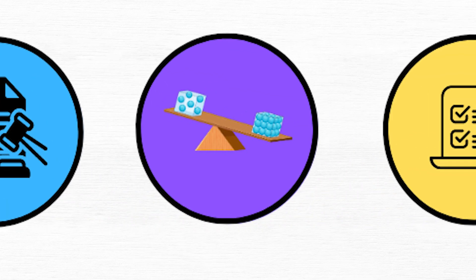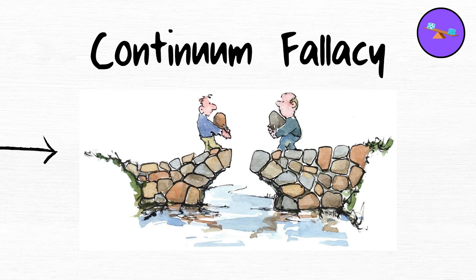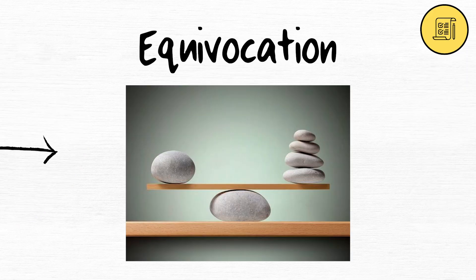Continuum fallacy. The continuum fallacy assumes no distinction between two states due to a continuum of states between them. Equivocation. The equivocation fallacy uses ambiguous terms within an argument.